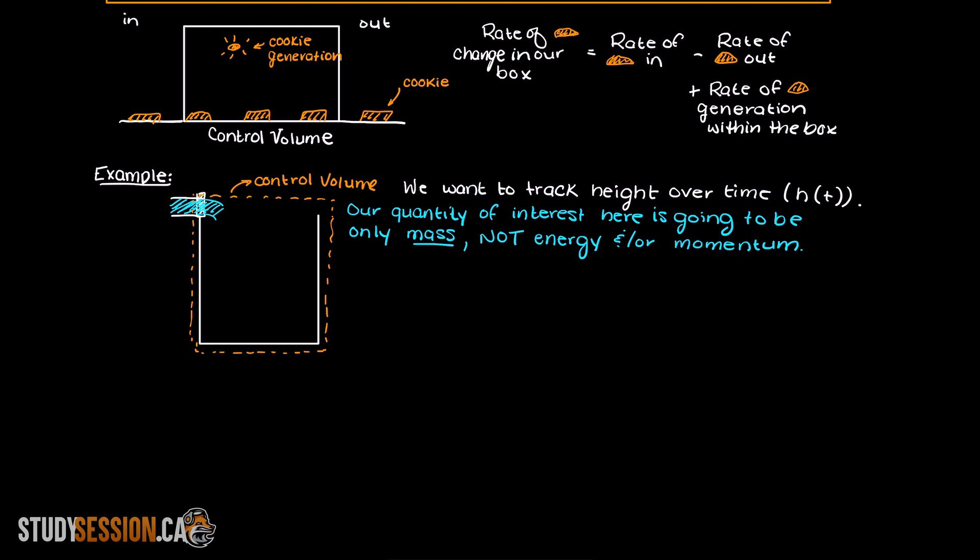However, if we had some movement or temperature change then we would need another balance equation for these two. So, let's create a balance for the mass of water into our control volume. We know that we have no flow out of our system, so that is automatically going to be a zero.